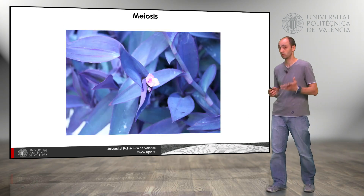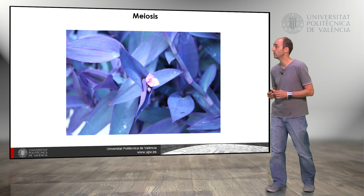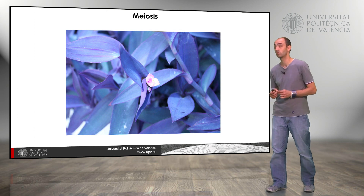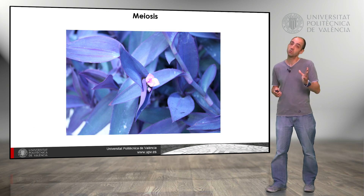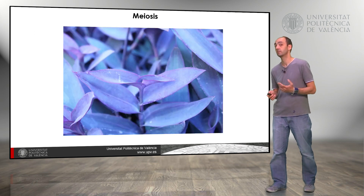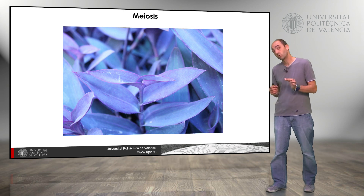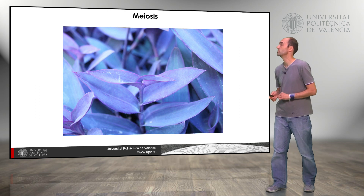We can use flowers; we can use the anthers or the ovarium. In this case we are going to use the anthers, and if we want to observe meiosis in different steps we are going to collect flowers that are still unopened, like we see in this image where we can see previous steps of meiosis.